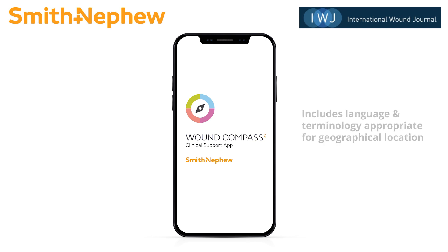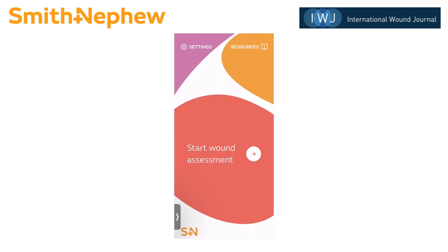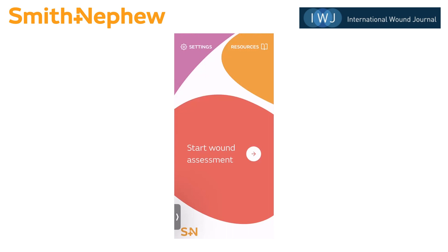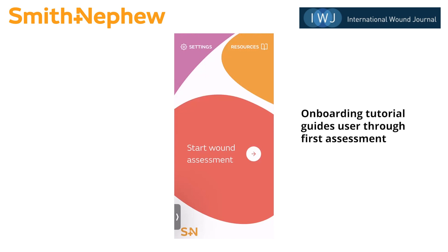On the home screen, you'll see settings and resources at the top of the page. Notice the book icon at the top right — that will remain throughout the assessment and will animate if there's additional information available. There's also an onboarding tutorial that will guide the user through the first assessment only. If the user wants that onboarding tutorial again, they can go into settings and bring it back up. I will start the assessment by tapping the arrow next to Start Wound Assessment.